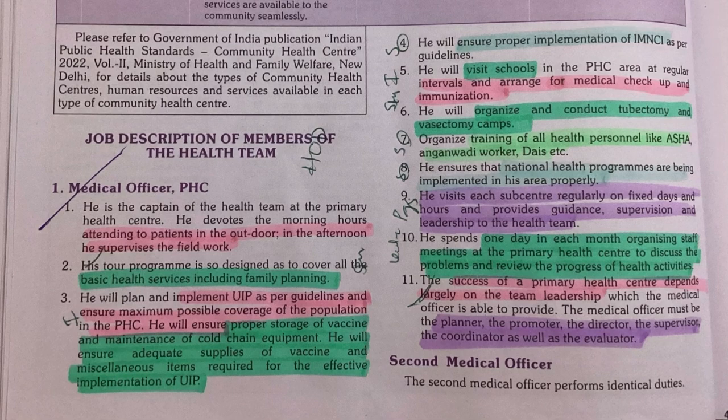Coming to point number three, the Medical Officer plans and implements the Universal Immunization Programme (UIP) as per guidelines, ensuring maximum possible coverage of the population in the PHC. He also ensures proper storage of vaccines, maintenance of the cold chain, and adequate supply of vaccines.